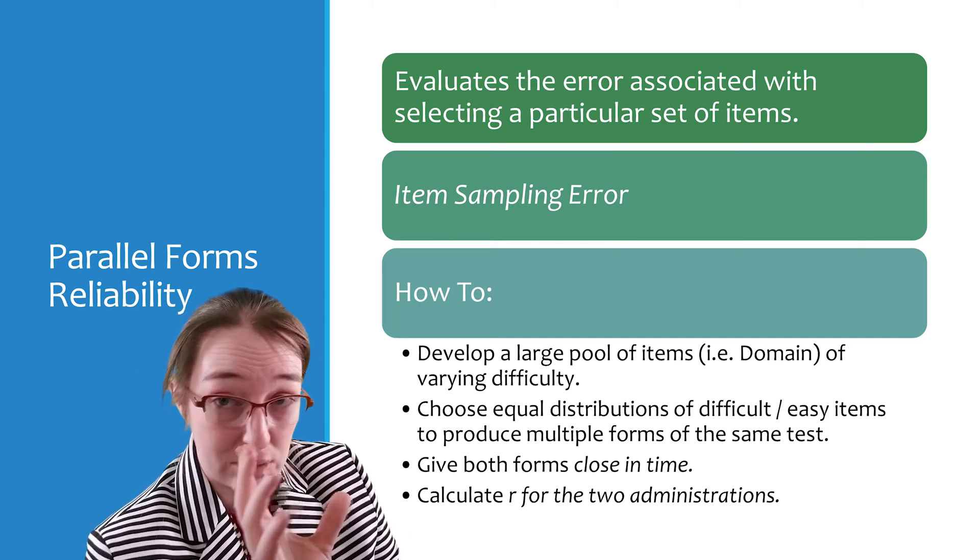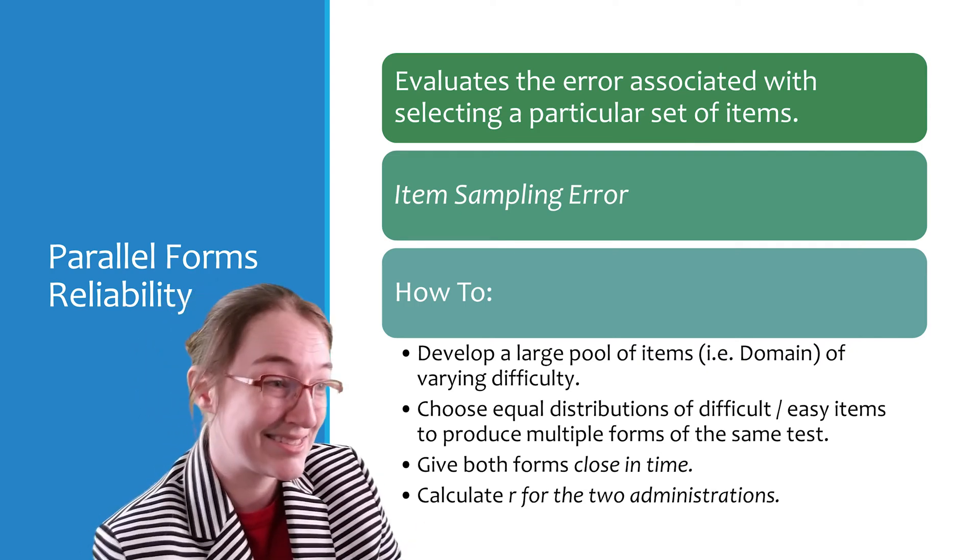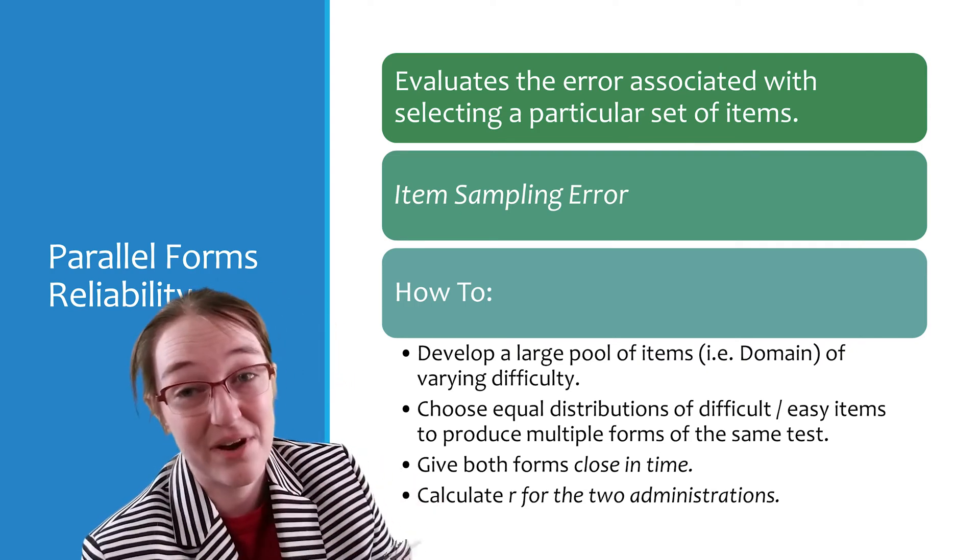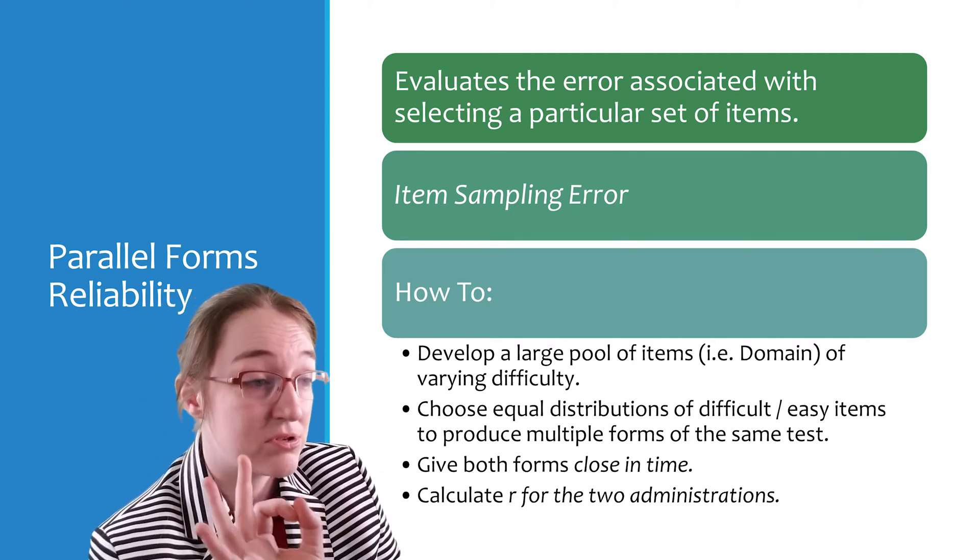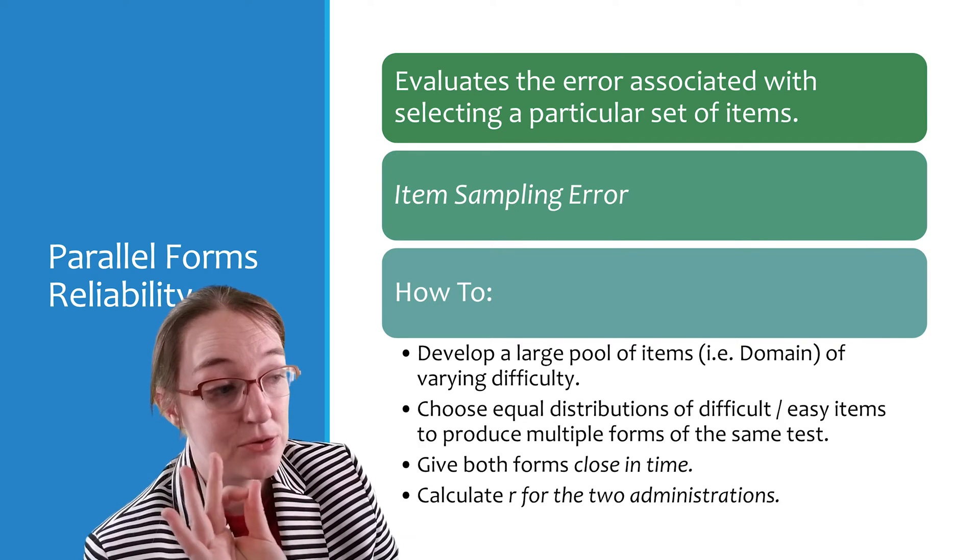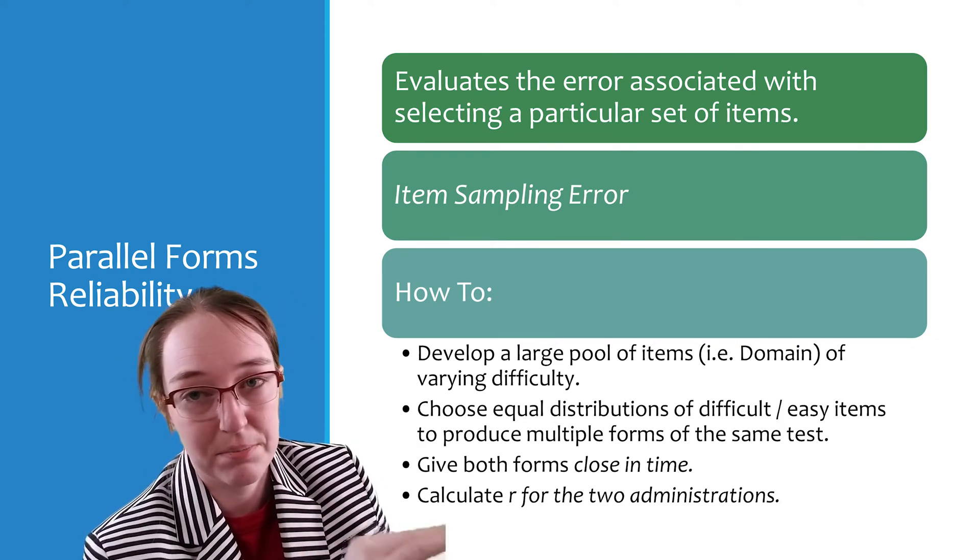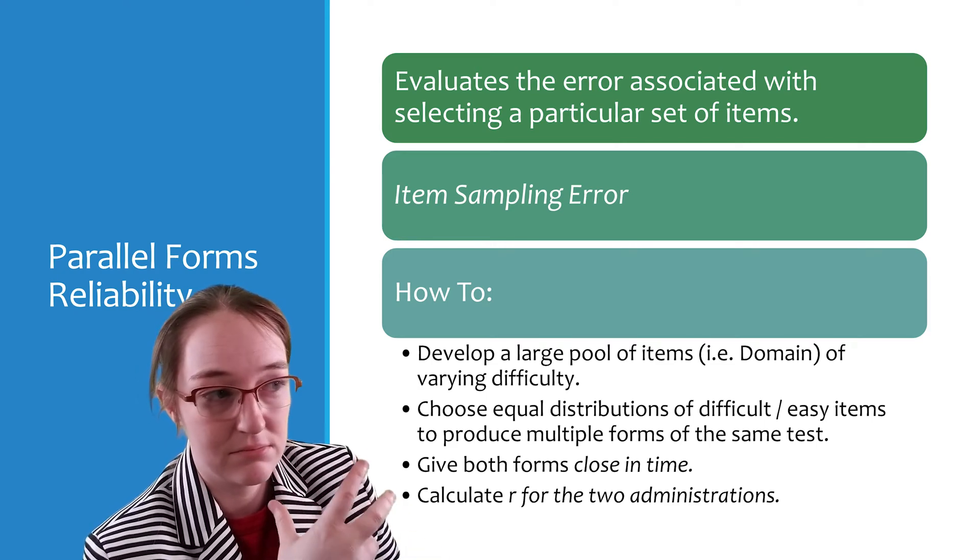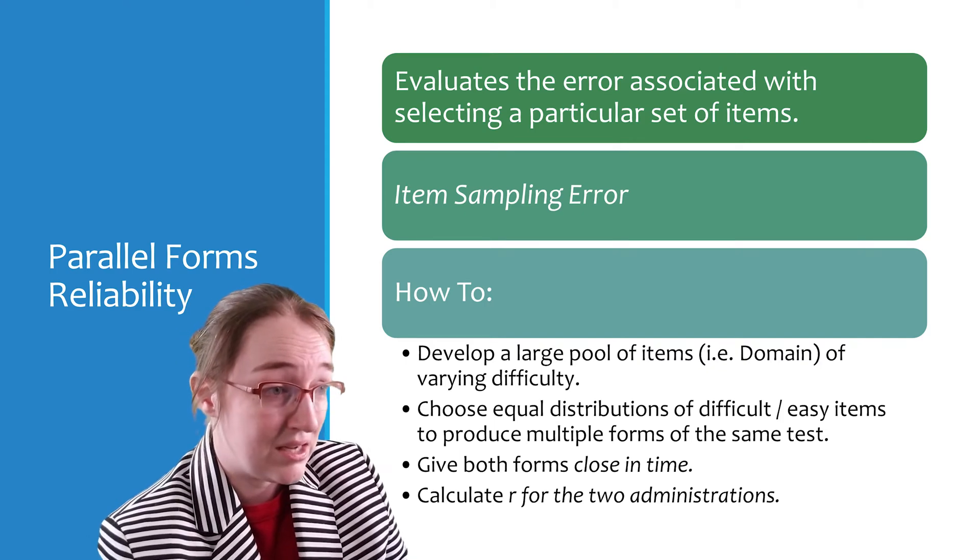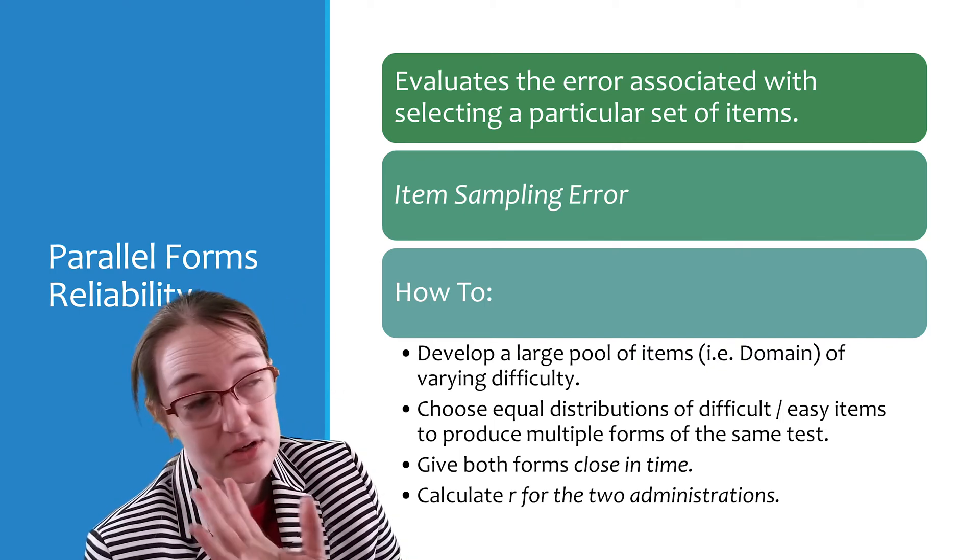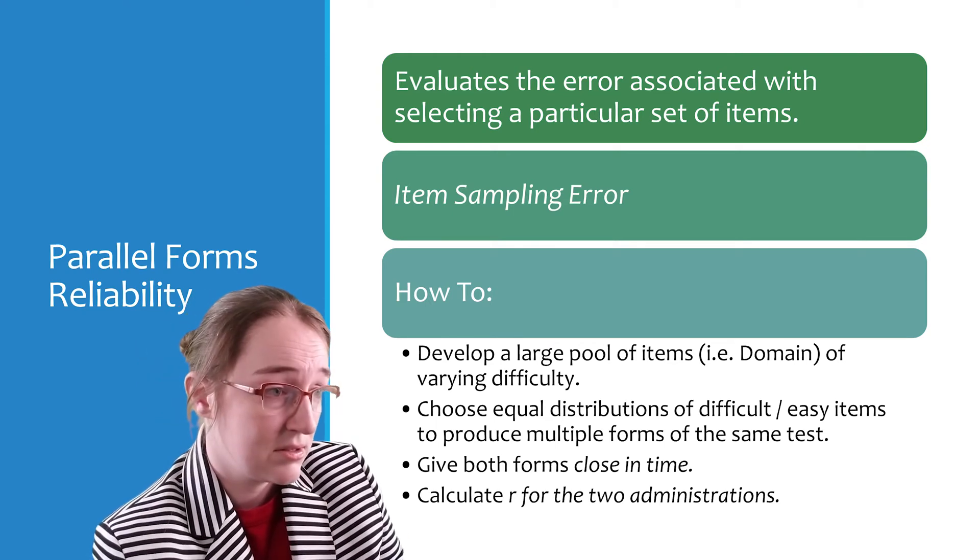So that it's more likely that you'll get exposure to this. So what you do is you have to include an equal distribution of difficult and easy items to produce multiple forms. You need them to be comparable in difficulty, otherwise it's useless, because then you are assessing people's performance at different ability levels.